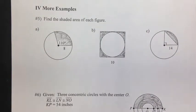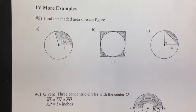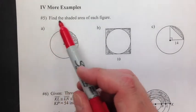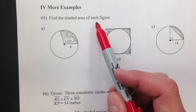All right, geometry fans, we're back here. Now we're ready to do part three of these notes talking about circumference and area of circles. So here we go. Number five, find the shaded area of each figure.